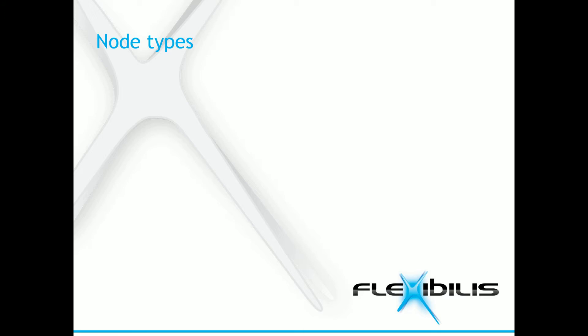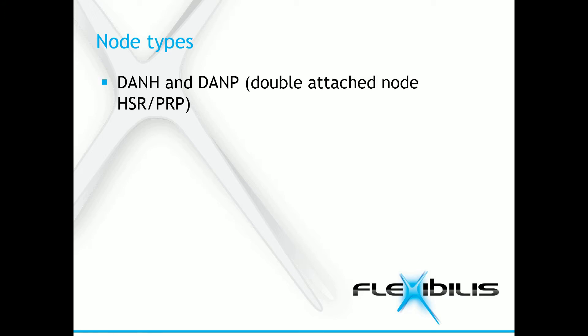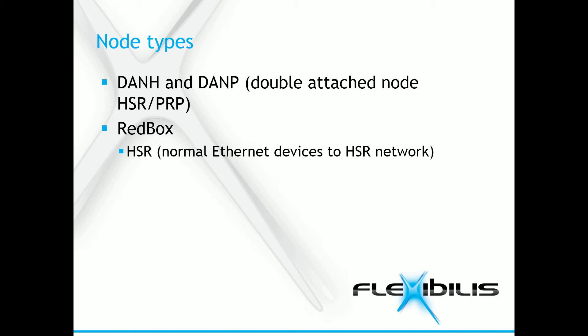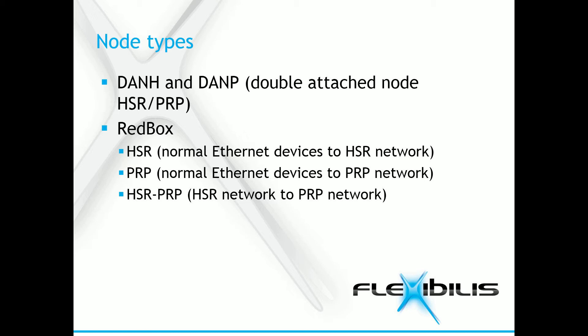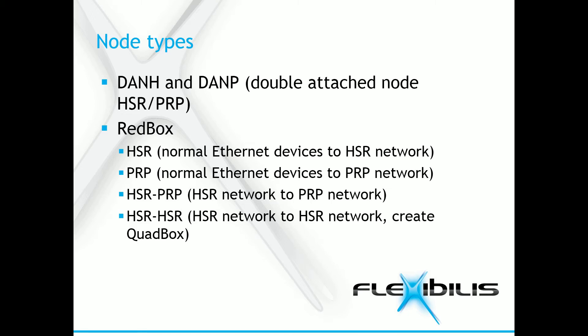HSR and PRP have several different node types. The basic nodes are the DANH, Double Attach Node for HSR, and DANP, Double Attach Node for PRP. The other node types include different kinds of red boxes. HSR red box connects the HSR network to external non-HSR devices via interlink. PRP red box does the same for PRP. HSR PRP red box connects a PRP network to an HSR network. HSR HSR red box connects HSR networks to each other and can be used to create, for example, a QUAD box, which can connect HSR rings to other topologies and other topologies together.